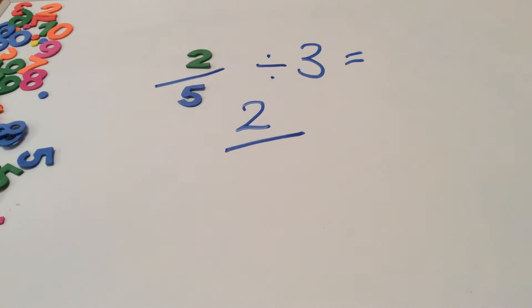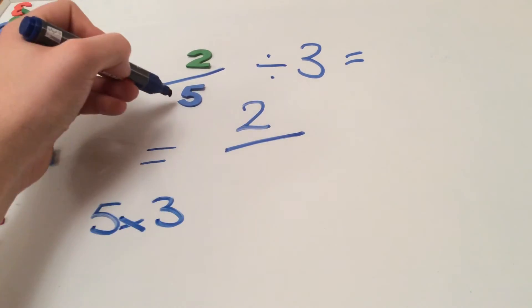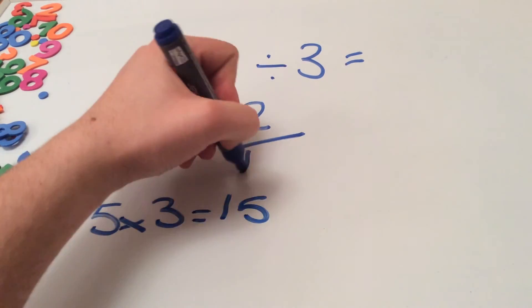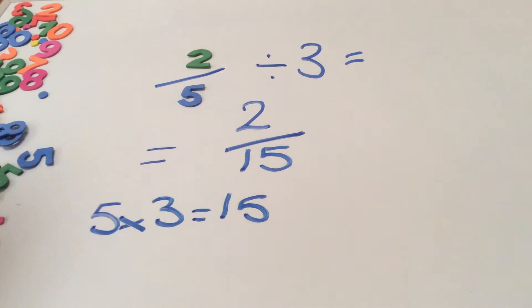Now all we need to do next to find out the denominator in our answer is 5 multiplied by 3. So the 5 multiplied by the 3 equals 15. So our answer to 2 fifths divided by 3 is 2 fifteenths.